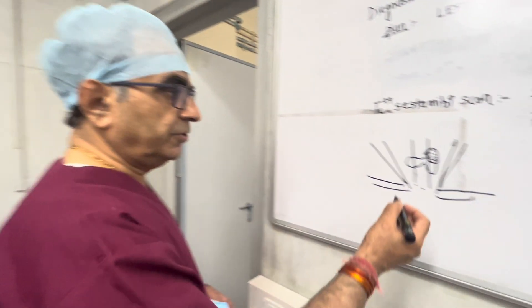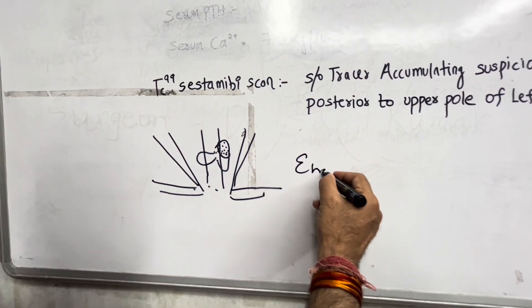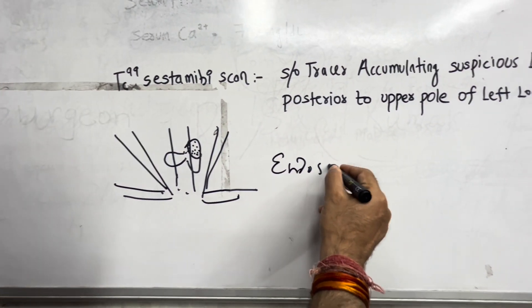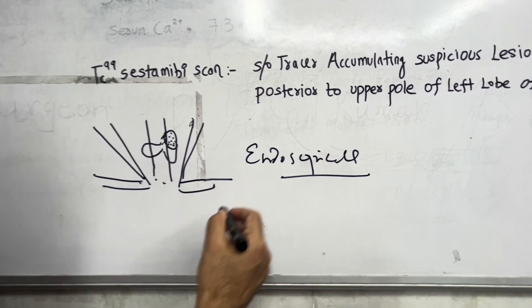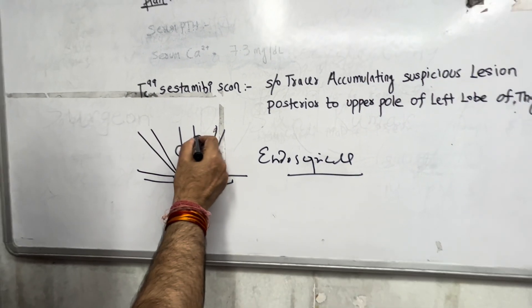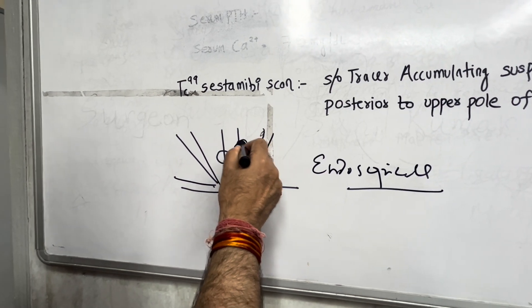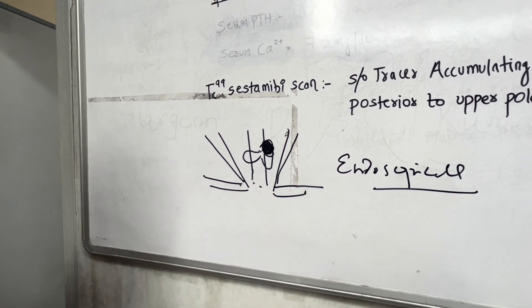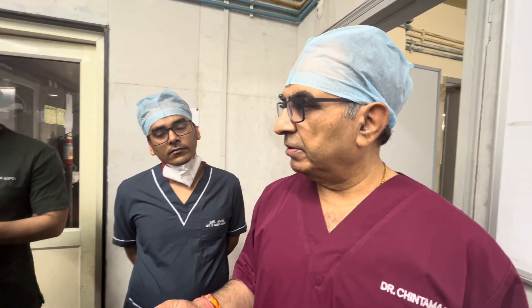Regarding the incision, you can do it endoscopically — there is a method of doing it endoscopically, there is no problem. However, we are not doing it that way here because it is a palpable gland, and it is moving on deglutition. That is one of the differentials for any thyroid or parathyroid swelling. What are the problems with a palpable parathyroid gland?